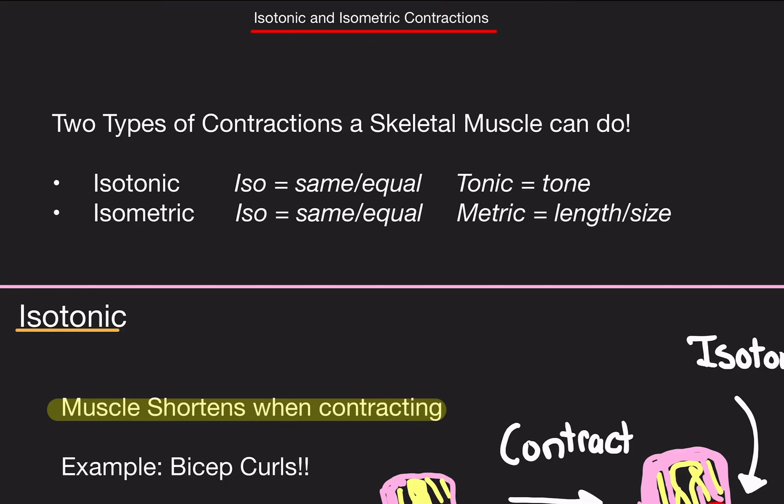Welcome back. Today we're going to go over isotonic and isometric contractions. This topic trips a lot of students up, mainly because they don't fully understand it or they're switching the two up. When you learn this, they don't give real-life examples — they probably just show you a picture of a muscle, explain the differences, and that's it. You can't really apply it to real life, and that's what I'm going to do here, so it helps you better understand what's going on.